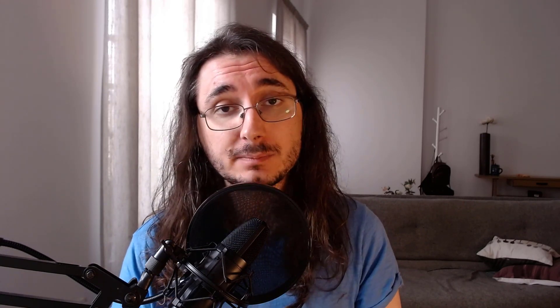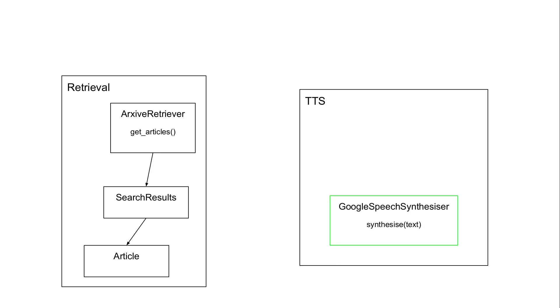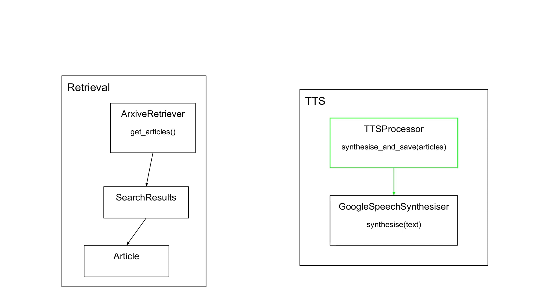The text-to-speech component has facilities to create vocal renderings of article summaries. These article summaries feature the article's title, its authors, as well as the abstracts. The TTS component features two classes. The first is GoogleSpeechSynthesizer, which has a method called synthesize — you pass some text, it gets sent to Google Cloud Text-to-Speech, it is rendered and sent back as a vocal version. On top of that we have TTSProcessor, which is responsible for synthesizing a bunch of articles and then storing them locally.